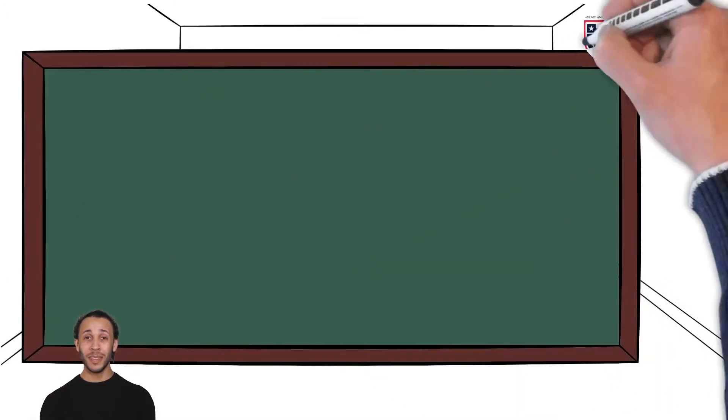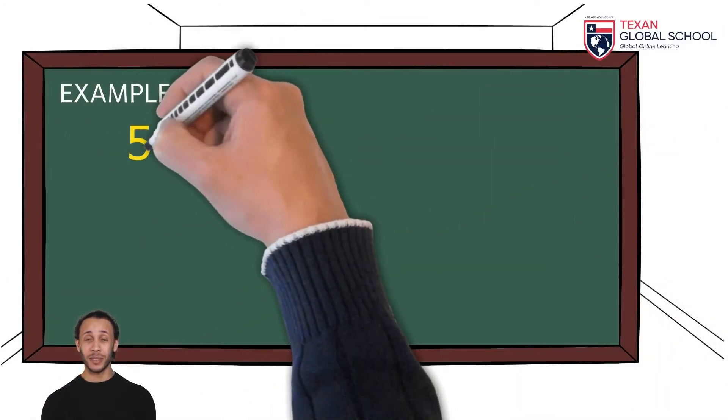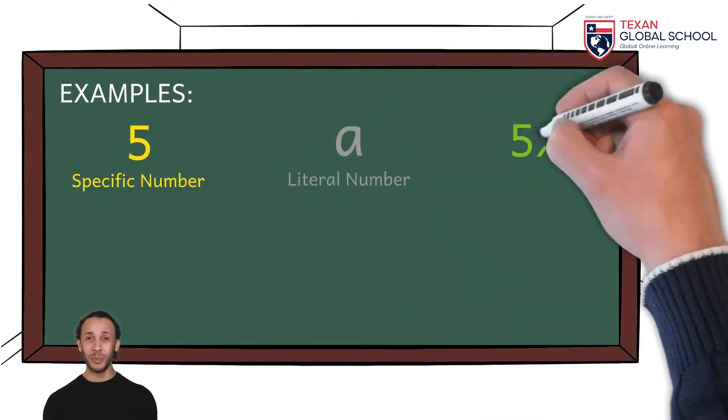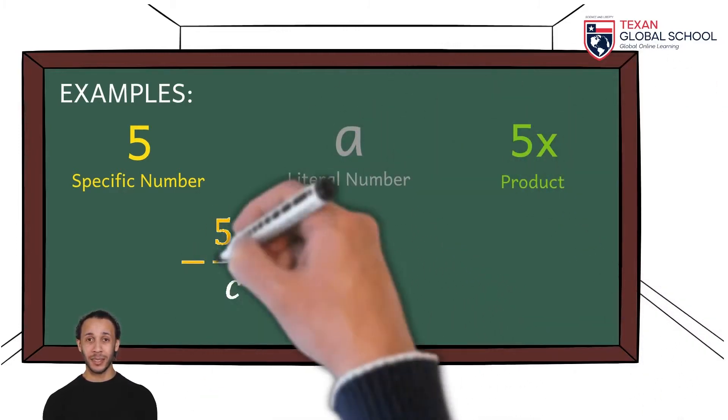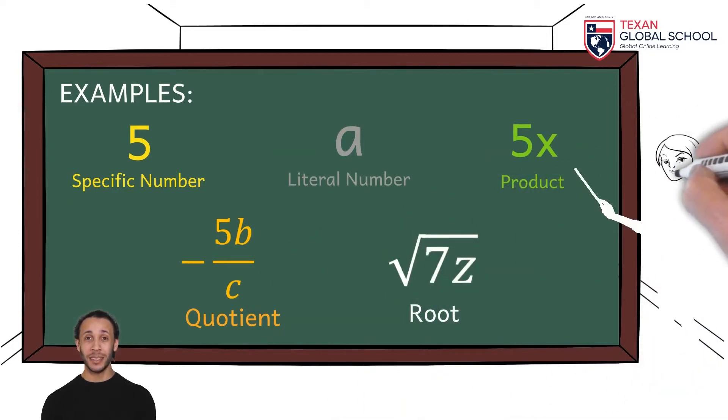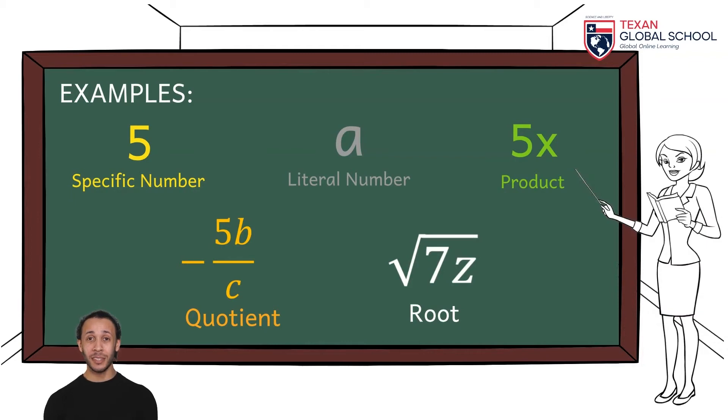5 can be an example of an algebraic term in some expression. Also, the variable e, or 5x, or the quotient minus 5b over c, even the square root of 7z. As you can see, none is separated by additions or subtractions since, in this way, we would have more than one algebraic term.